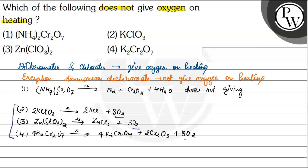All three of these compounds give oxygen on heating, but ammonium dichromate does not give oxygen on heating. So the most appropriate answer is option number one.